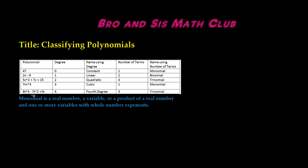In our last example, we have 8t to the 4th minus 7t squared plus 3t. The greatest exponent in this polynomial is 4, so this will be to the 4th degree.